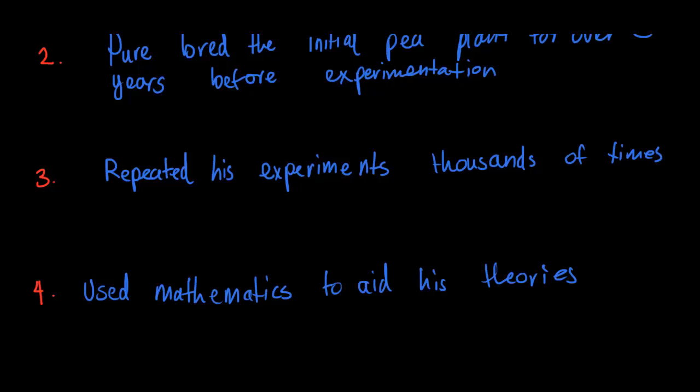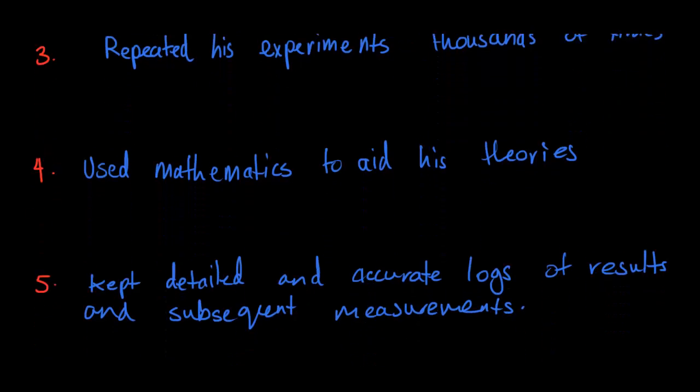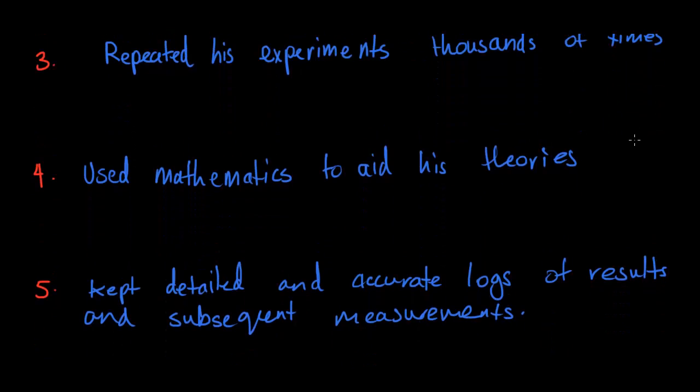Number four: he used mathematics to aid his theories. Since he was very bright in mathematics at that time, he was able to come up with theorems and use the supplementary results from his experiments to create equations that matched what he thought the experiment showed. He used mathematics to support and aid his theories.